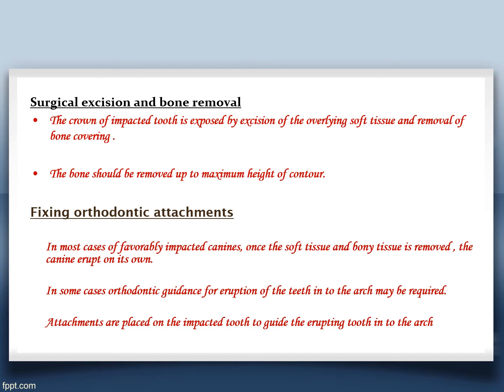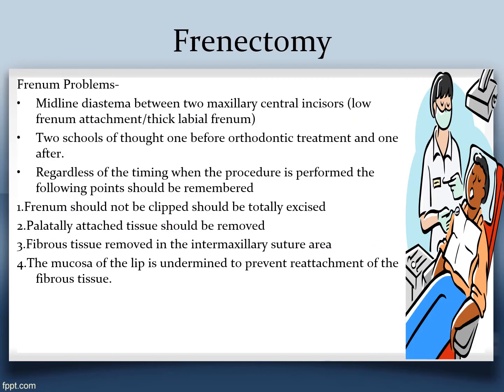During surgical excision, the crown of the impacted tooth is exposed and bone is removed up to the maximum height of contour. Orthodontic attachments are then fixed as described previously. Just know the entire procedure and the steps involved.